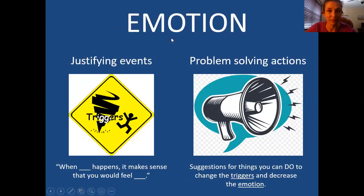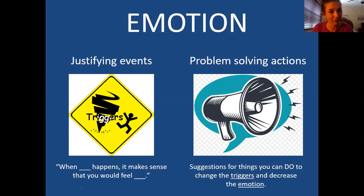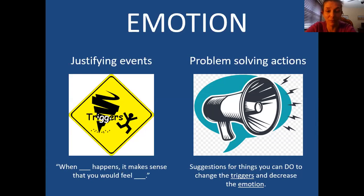The next video about problem solving is set up by going emotion by emotion, identifying justifying events — essentially the prompting events — which are typical events that lead most people to experience that emotion. So if you experience those events, chances are you might feel that way, and you can validate yourself because it makes a lot of sense. Then you could take some problem solving actions to help change or deal with those justifying events. When you change the triggers, you therefore could change the emotion. For example, if you're always around a toxic person making you feel angry and drained, maybe it's time to spend less time with that person, set boundaries, or change the conversation — things to change that prompting event so you don't keep feeling the same way.